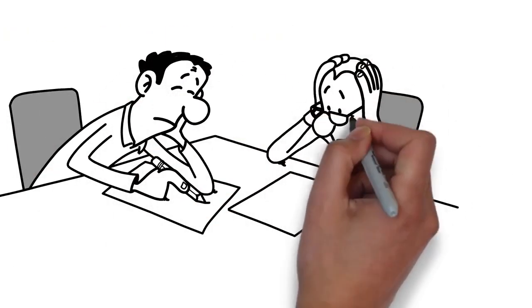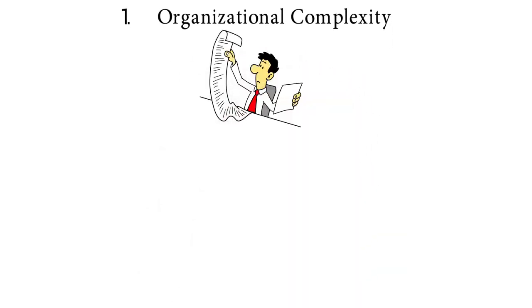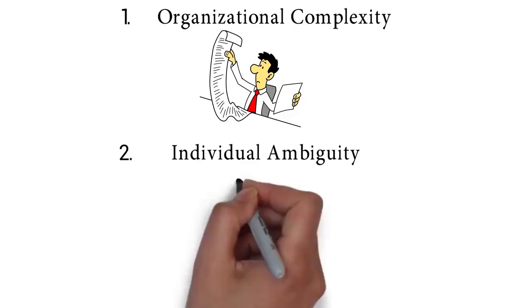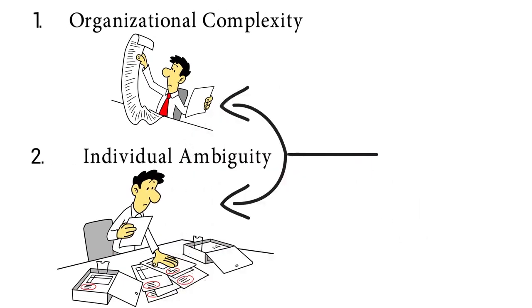One, organizational complexity, where it's not clear what processes to follow, and two, individual ambiguity, where people aren't sure what to do. Both of these forces can create gray areas that lead to low morale and internal friction.